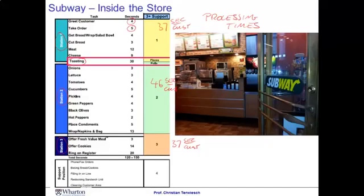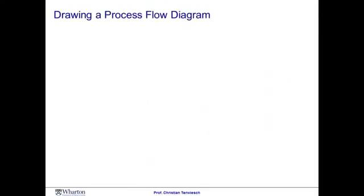This is pretty useful, because now we know there are three workers carrying out the work, we know all the things needed to make a sandwich, and we know the total time it takes. Let me propose a slightly different representation of the same data. We can draw a picture that captures the flow of a flow unit through the process here at Subway. This picture is called a process flow diagram.